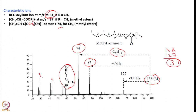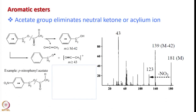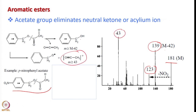Now let us look at aromatic esters. Acetate groups are readily eliminated as neutral ketenes, and acylium ions are often observed. A typical example is nitrophenyl acetate, with a molecular mass of 181. First, NO2 loss (M-42) gives a peak at 139, then a peak at 123, and further fragmentation. In aromatic esters, the possible initial cleavage site is the O-C bond next to the carbonyl group.